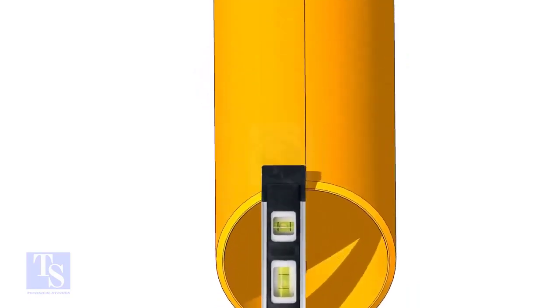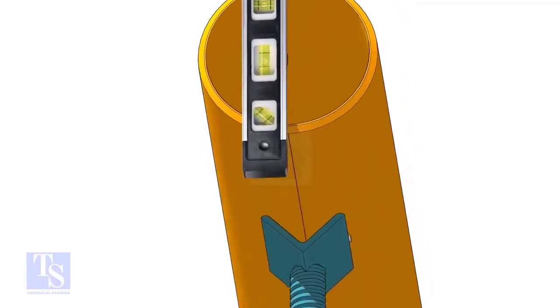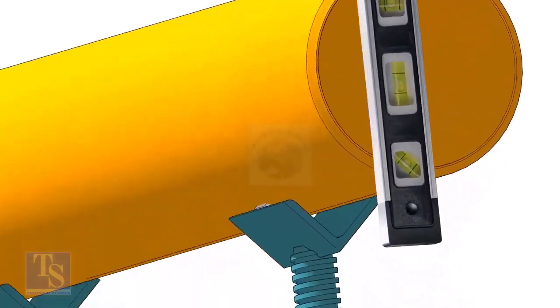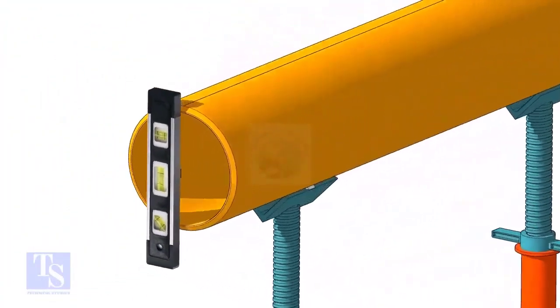Level the pipe horizontally and vertically as shown. After leveling, arrest the pipe to stop it from rotating.